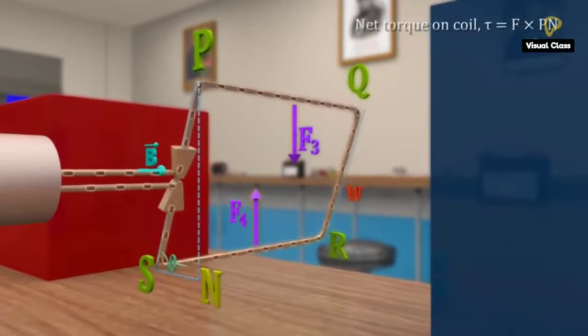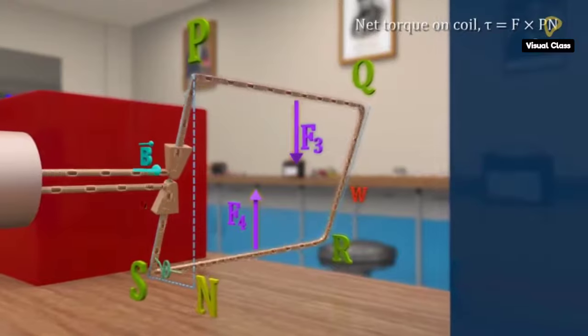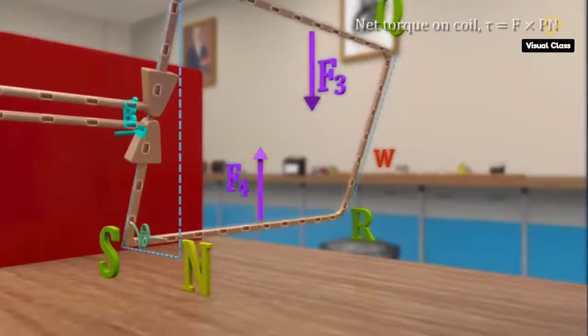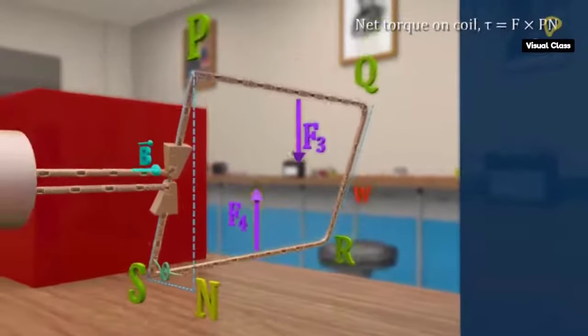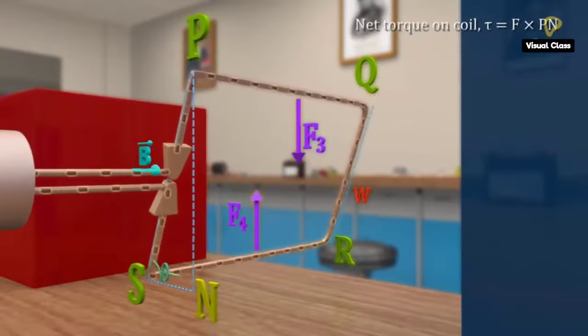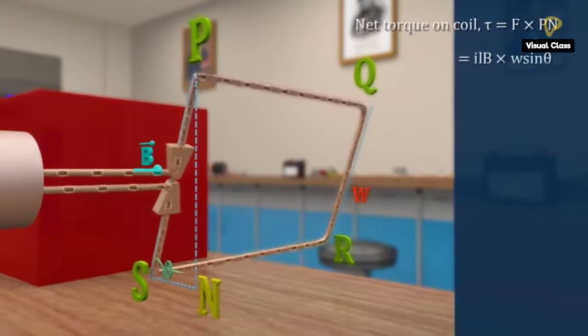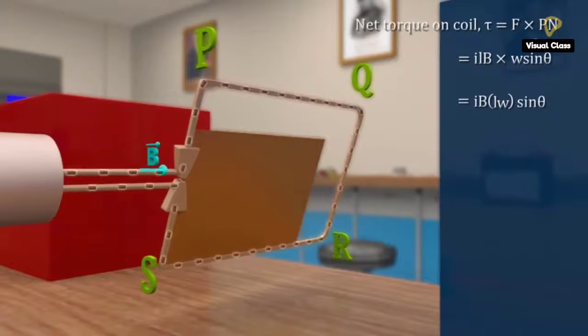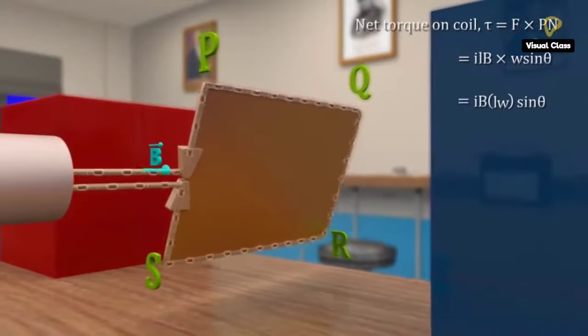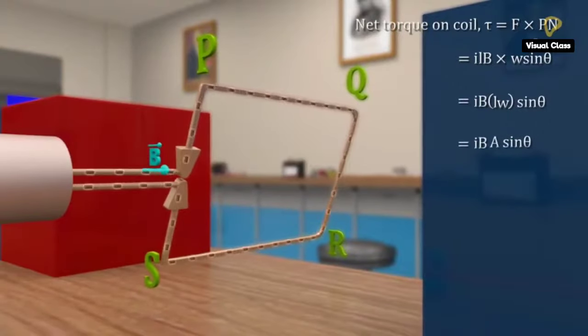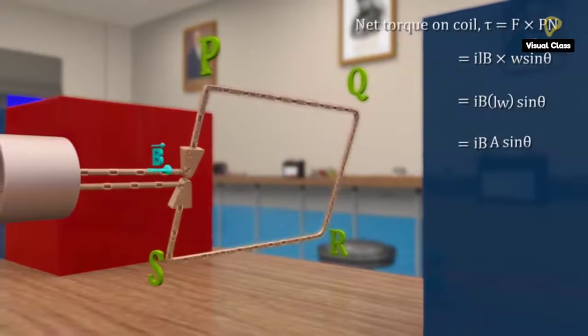Net torque acting on the coil is equal to the product of magnitude of force and the perpendicular distance between the forces. WL is equal to area of the loop. Hence, torque on the coil is equal to IBA sin theta.